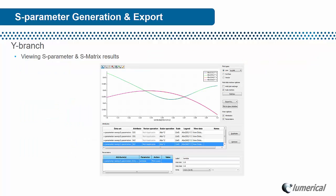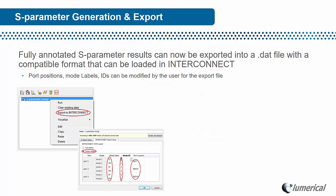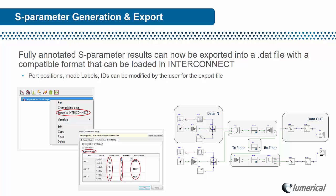Once the simulations are done, you can view any of the S-parameter results, and you can also export the S-parameters into a DAD file that is compatible with InterConnect. For example, in this transceiver circuit simulation, I can simulate the gradient coupler in FDTD, extract the S-parameters, and then use this result to represent the gradient coupler in a system-level simulation in InterConnect.